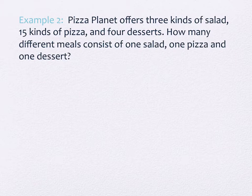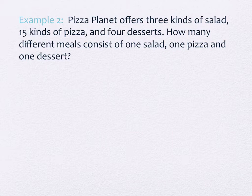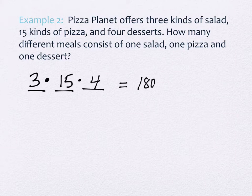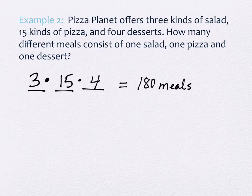Pizza Planet from Toy Story offers three kinds of salads, 15 kinds of pizza, and four desserts. There are three events: choosing a salad, a pizza, and a dessert. One event has three ways, one has 15 ways, and one has four ways. The fundamental principle of counting says multiply those outcomes together: 3 times 15 times 4 equals 180 different meals.